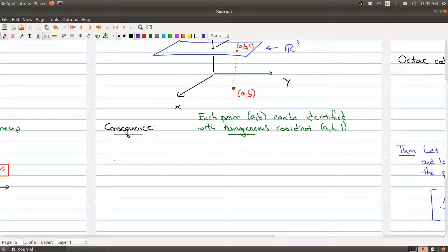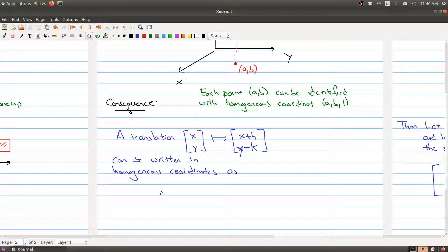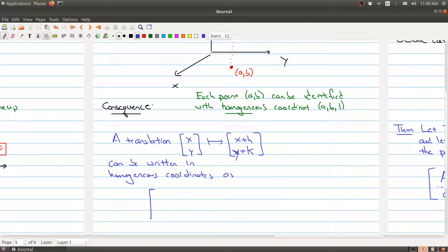And how does this help us? Well, as a consequence we have the following: a translation which really amounts to taking a vector (x,y) and sending it to (x+h, y+k) - so you're always shifting the x coordinate by h and the y coordinate by k - can be written in homogeneous coordinates as now mapping the vector to (x+h, y+k, 1).